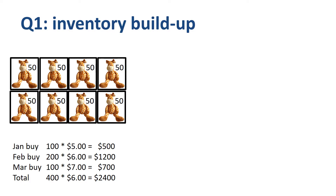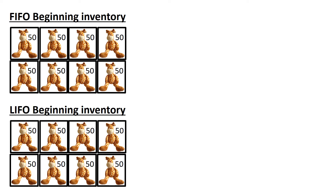In the warehouse, the company does not specifically identify the boxes; they just stack them on a big pile. For cost accounting and inventory valuation purposes, the company does keep track of the timing of the buys and the unit cost. Then we go to April. The ending inventory of Q1 is the beginning inventory of Q2. The visual representation of the FIFO inventory flow is at the top; LIFO is at the bottom.